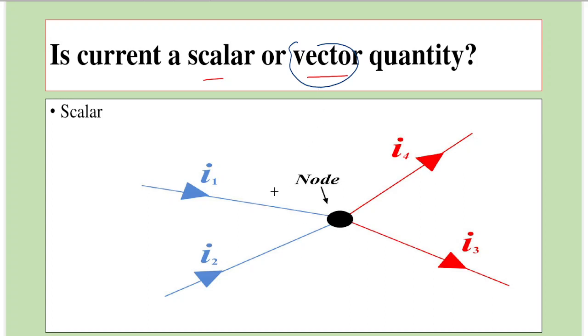In that sense, if we look at current, for example, here there are two branches where current entering is I1 and I2 here. Let us assume that current entering through this branch is 5 Ampere and this is 3 Ampere.